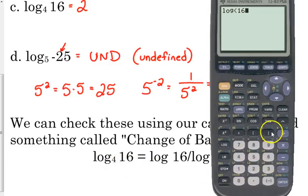you take the log of, I call it the big number. It's not necessarily bigger in magnitude, but it's the number that's not the subscript. Divided by, make sure you close the parentheses, divided by the log of the base, 4 in this case, and that'll give you 2. So you can always check these using your calculator and change of base.